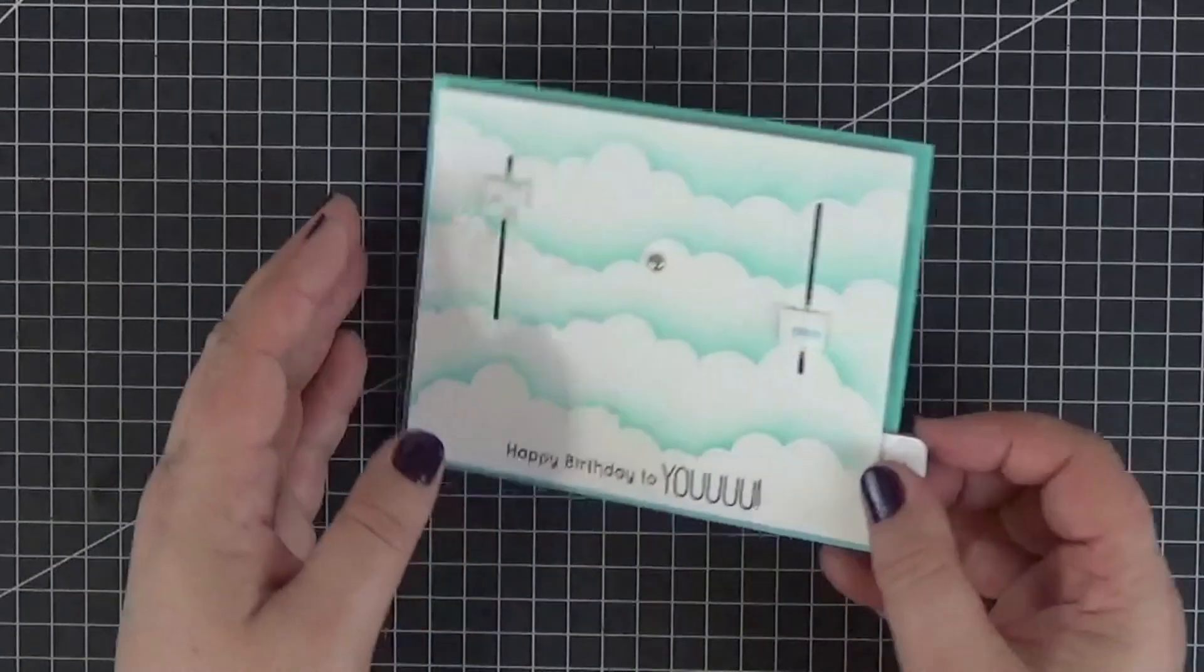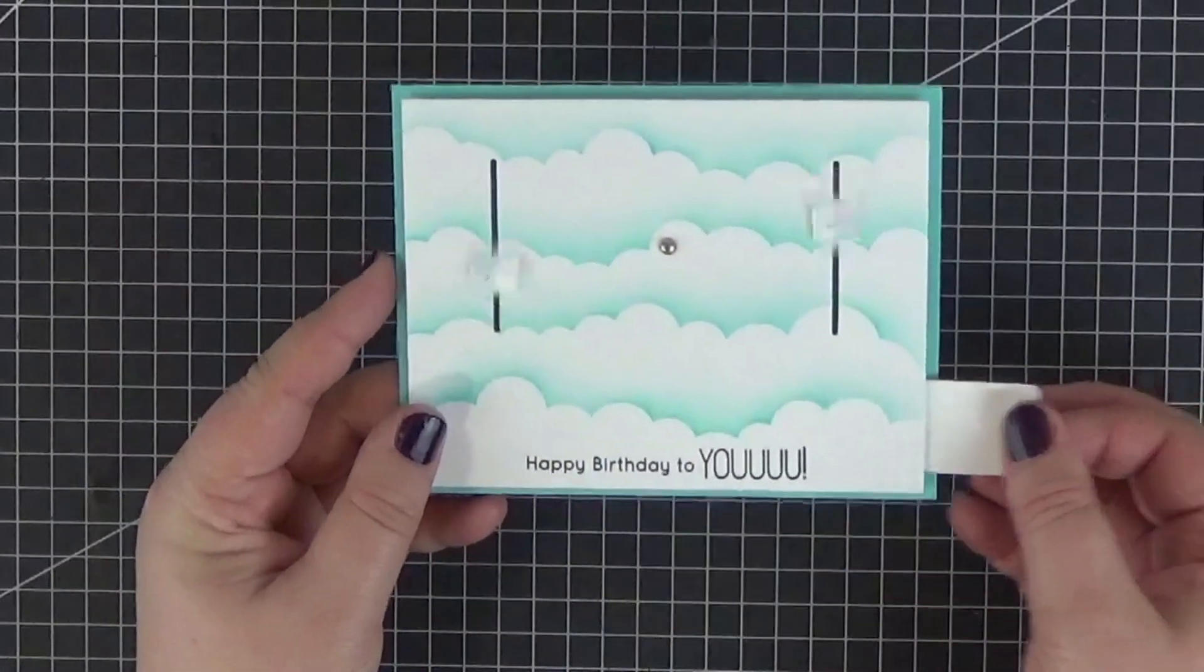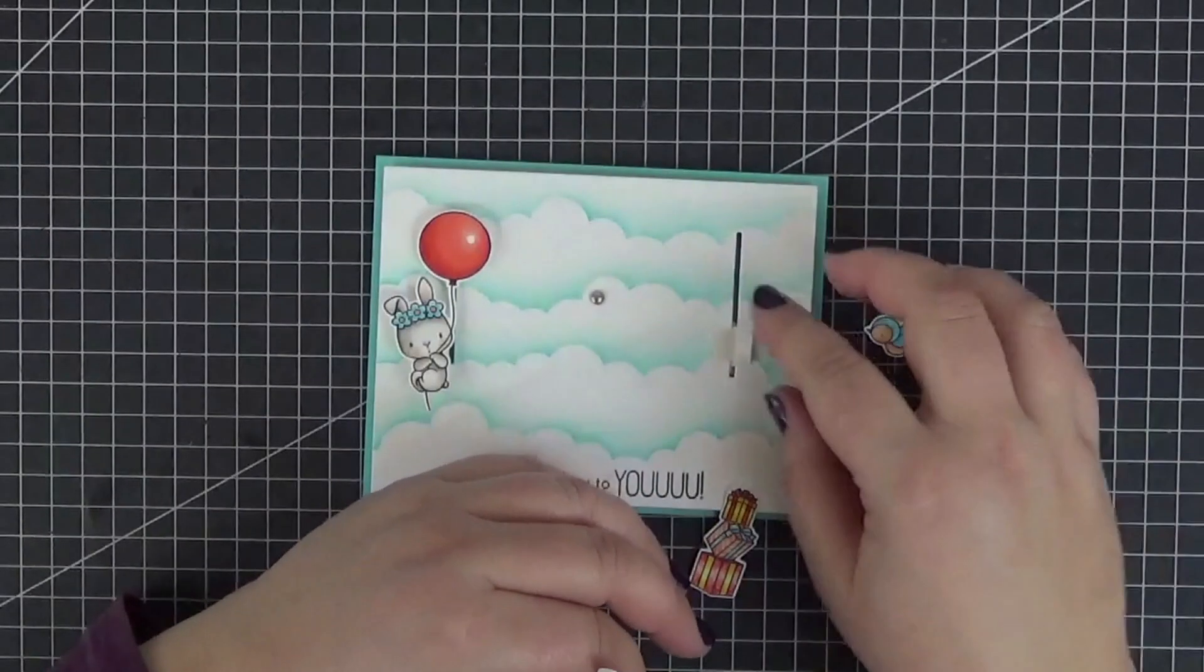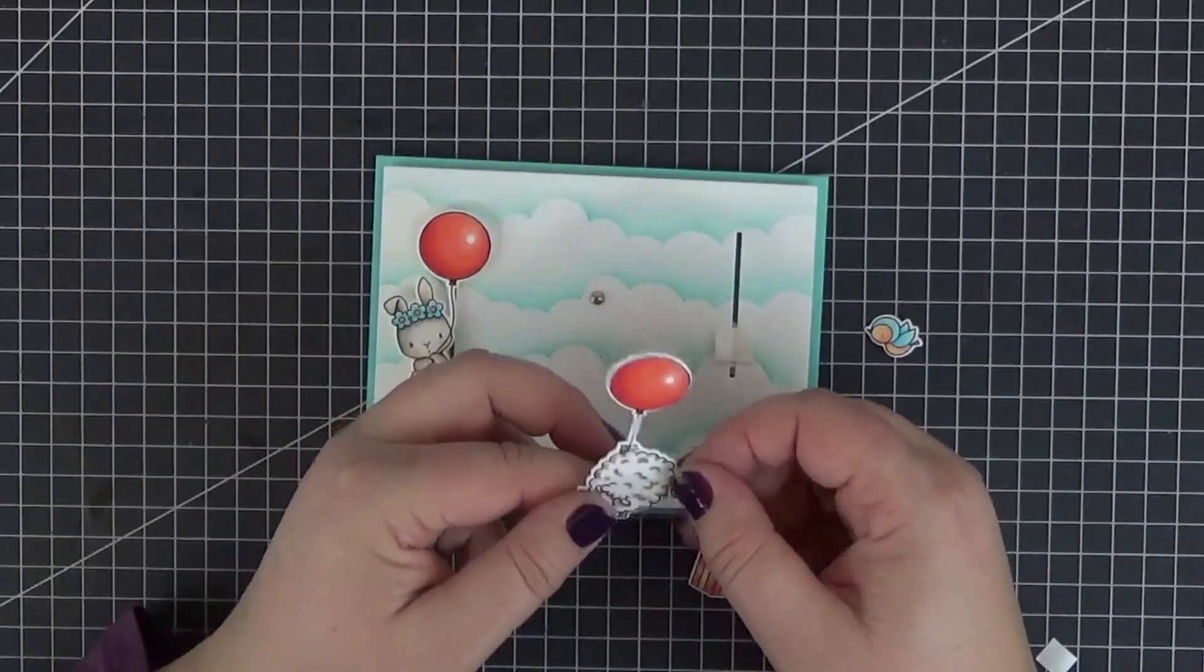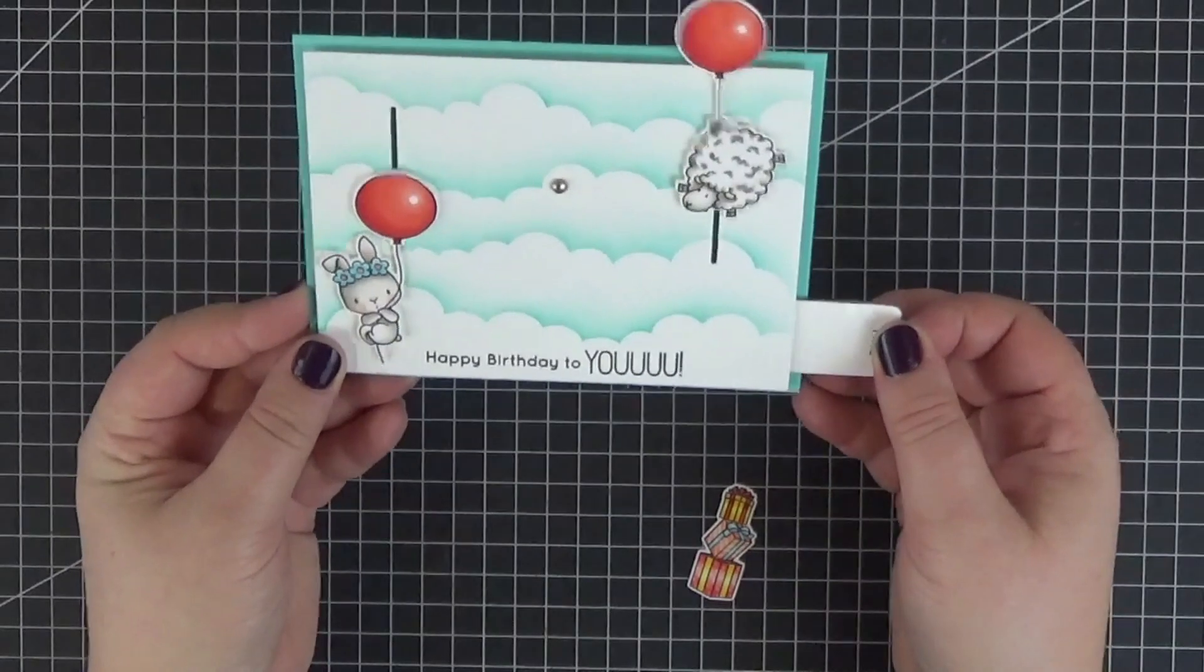Before adding our critters, let's see if everything is working as it should. Okay, this is looking great. Since our critters are nice and sturdy thanks to the extra die cut layer, we can have the sheep sliding off the card with no problem.